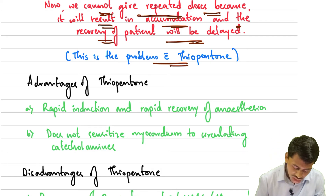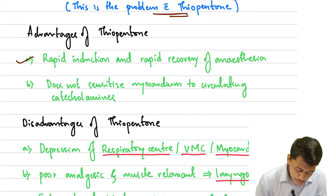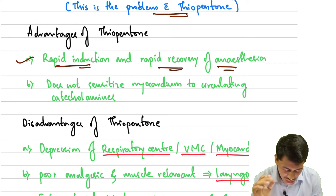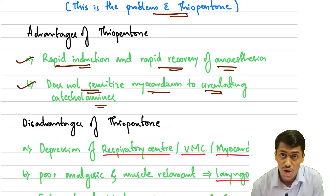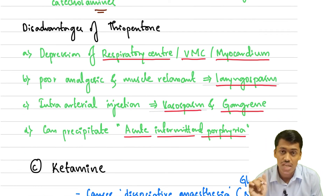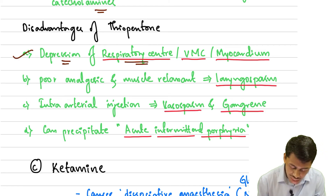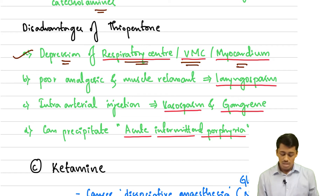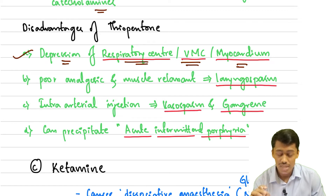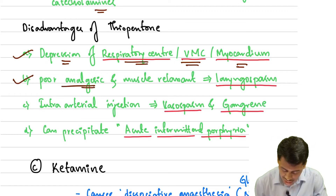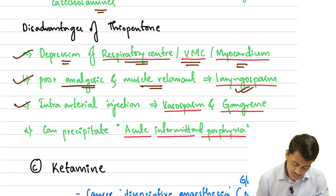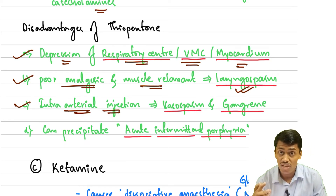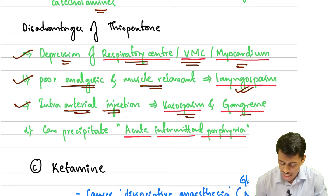The advantages of thiopentone include rapid induction and rapid recovery of anesthesia, and it does not sensitize the myocardium to circulating catecholamines. The disadvantages are that it causes depression of the respiratory center, vasomotor center, and myocardium. It is also a poor analgesic and a poor muscle relaxant, and can cause laryngospasm. Intra-arterial injection causes sudden vasospasm leading to gangrene, and it can also precipitate acute intermittent porphyria.